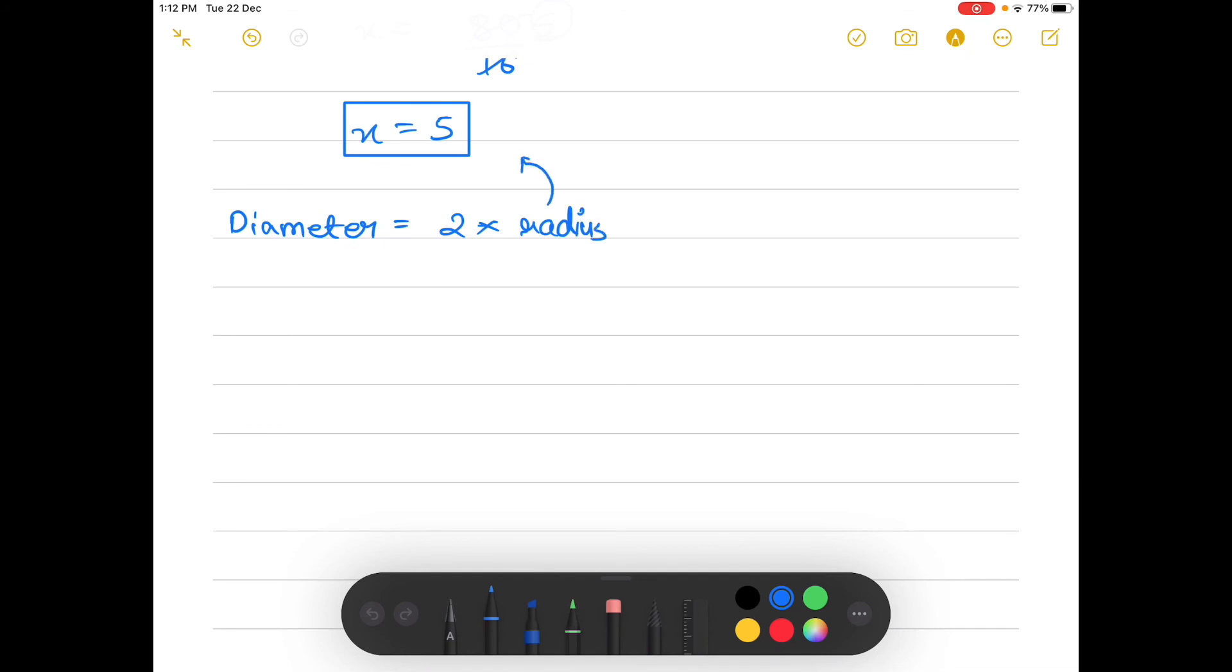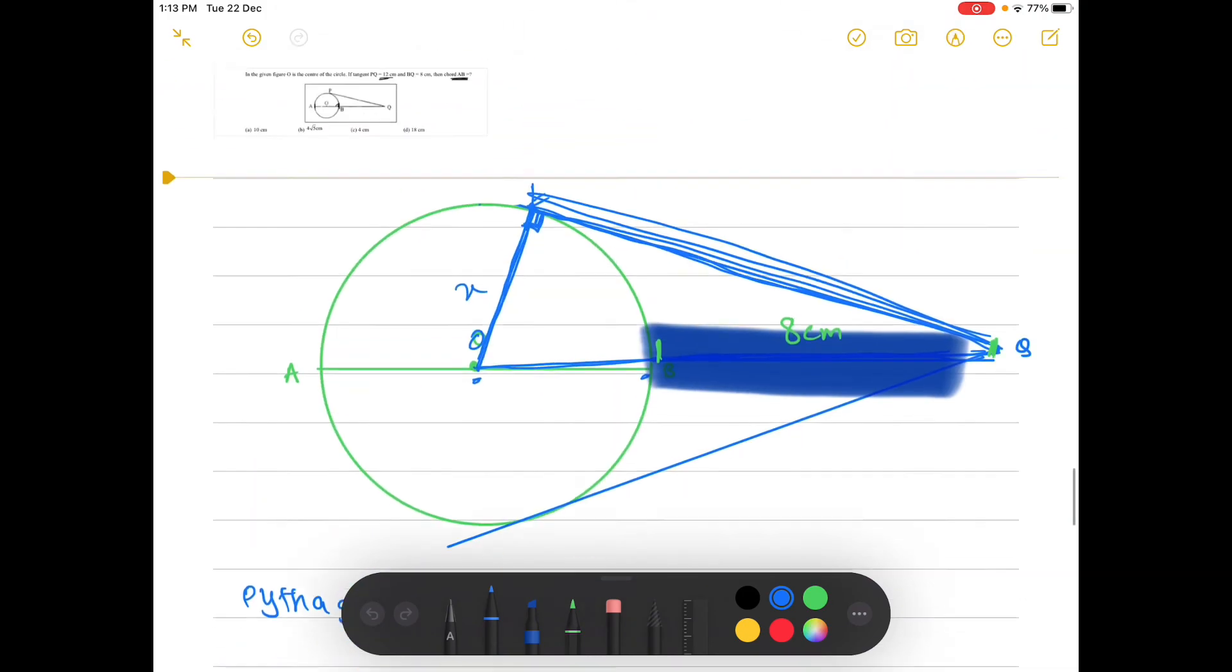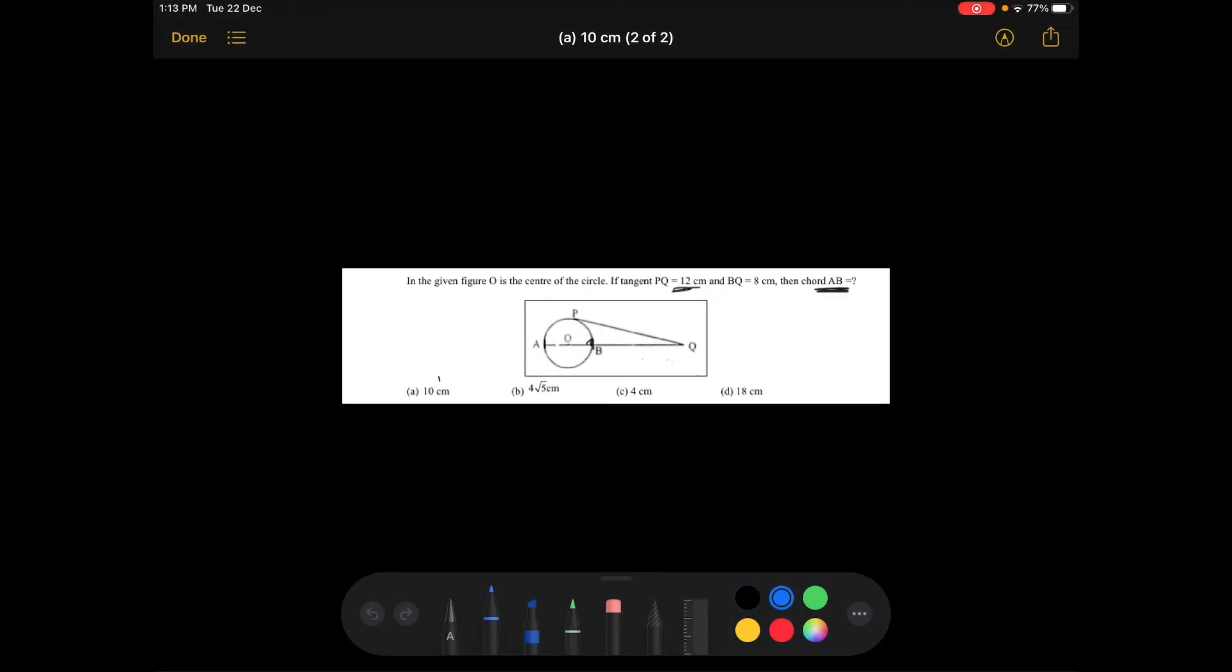And radius is 5, therefore diameter AB is equal to 2 times x, which is equal to 2 times 5, which is equal to 10 centimeters. So the option is A. Answer equals A.